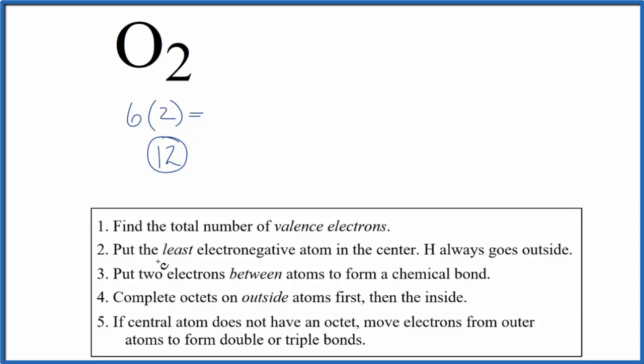Normally we put the least electronegative element in the center. Since it's O2, we only have oxygen. Let's just put them like this. Then we'll put a pair of electrons between atoms. That's going to form the chemical bond right there.